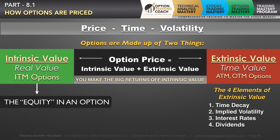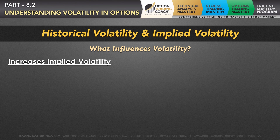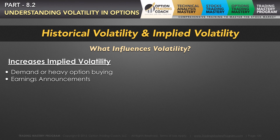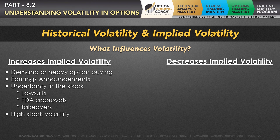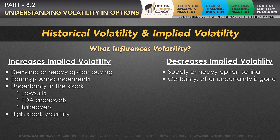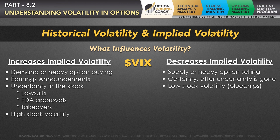Put options carry dividends. There are two types of volatility: historical volatility and implied volatility. Increases in implied volatility can come from things like heavy demand or option buying, earnings announcements, uncertainty in the stock, lawsuits, FDA approvals, and also takeovers or buyouts. Things that can decrease implied volatility include heavy option selling, certainty when uncertainty is gone, and low stock volatility like in blue chip stocks.